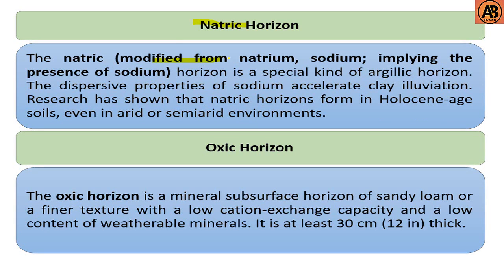The next one is the natric horizon. Natric — modified from natrium, sodium — implies the presence of sodium. The natric horizon is a special kind of argillic horizon. The dispersive properties of sodium accelerate clay eluviation. Research has shown that natric horizons form in Mollisols and Alfisols, even in arid or semi-arid environments.